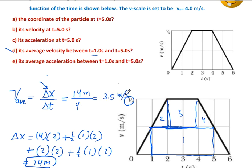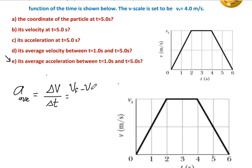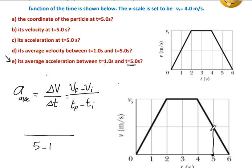The last question is average acceleration between time 1 second and time 5 seconds. Average acceleration equals delta v divided by delta t: v final minus v initial divided by t final minus t initial. At time 5, the velocity was 2, and at time 1, the velocity was also 2. So the average acceleration equals 0 meters per second squared.